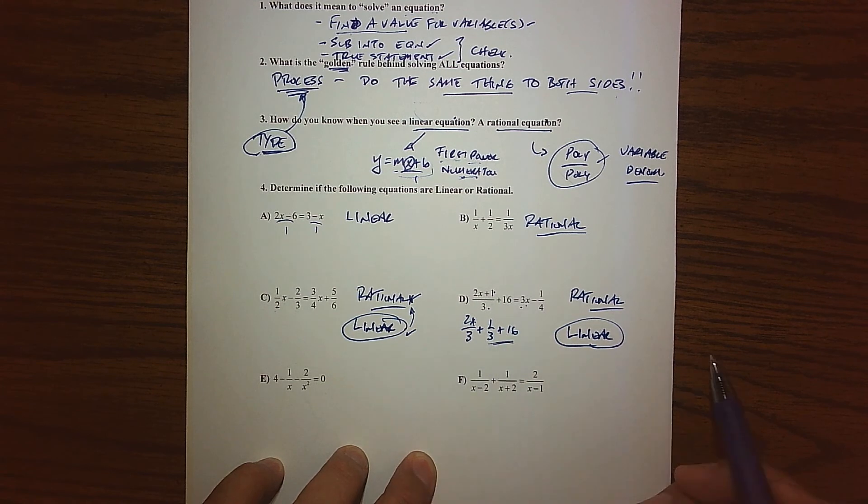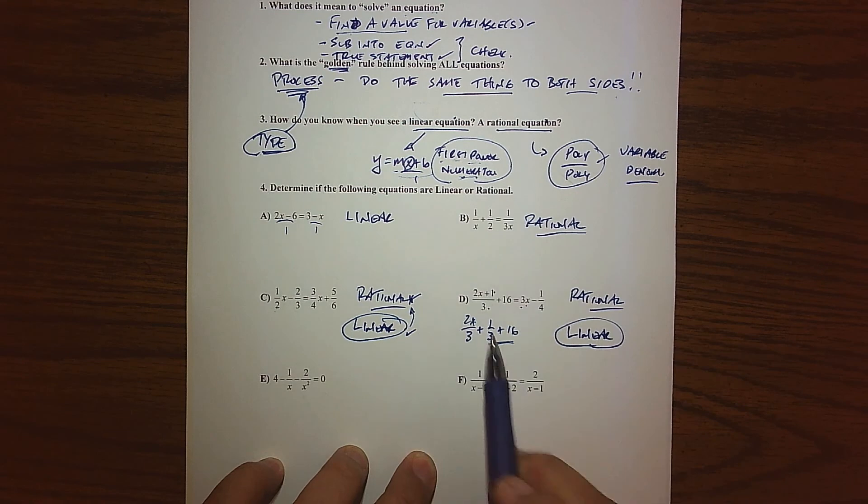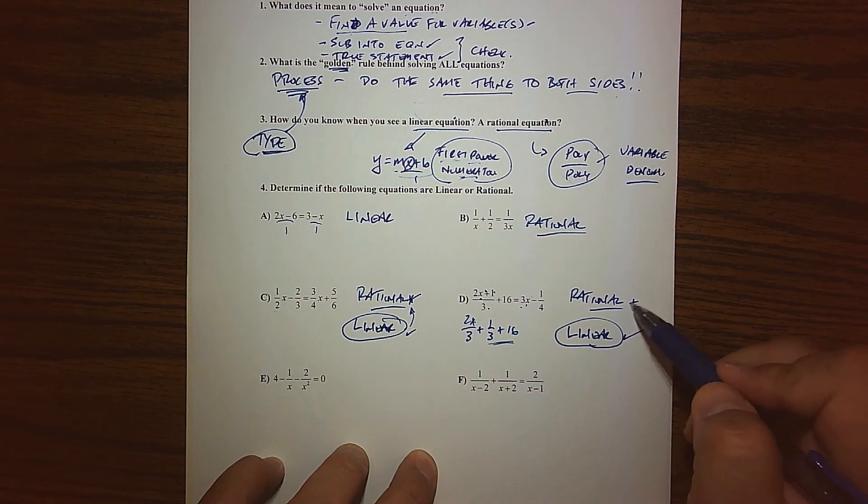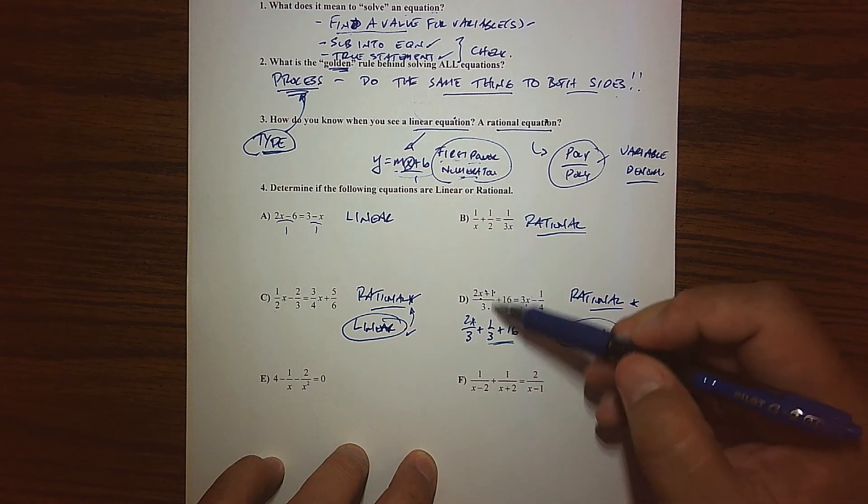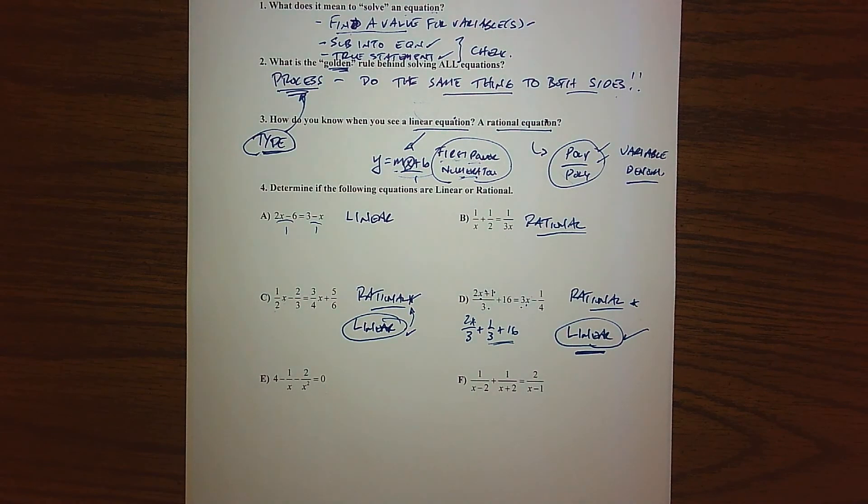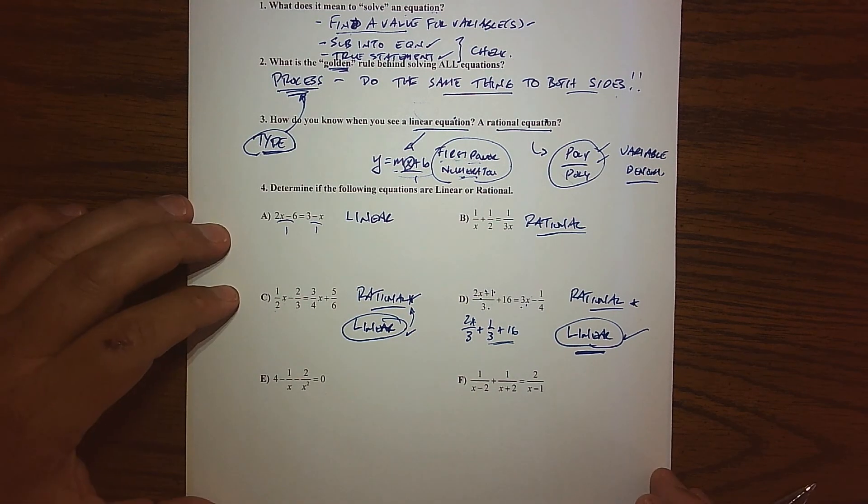2x plus 1 over 3 breaks down into 2x over 3 plus 1 over 3. So I essentially have, there's my m, there's my x, and there's my b. We're thinking right here, there's my variable. It's up in a numerator to the first power. There's my variable to the first power. So technically speaking, that's linear. But you could get away calling it a rational because I do see the idea that I have a poly over a poly. But I think linear would be the correct answer there.